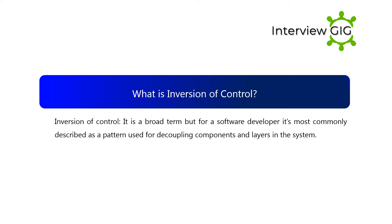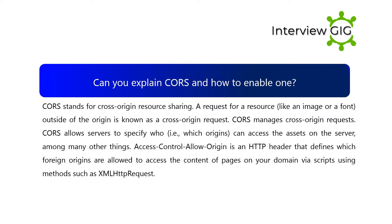What is Inversion of Control? Inversion of Control is a broad term but for a software developer it is most commonly described as a pattern used for decoupling components and layers in the system. Can you explain CORS and how to enable one? A request for a resource like an image or a font outside of the origin is known as a cross-origin request. CORS manages cross-origin requests and allows servers to specify which origins can access assets on the server. Access-Control-Allow-Origin is an HTTP header that defines which foreign origins are allowed to access the content of pages on your domain via scripts such as XMLHttpRequest.